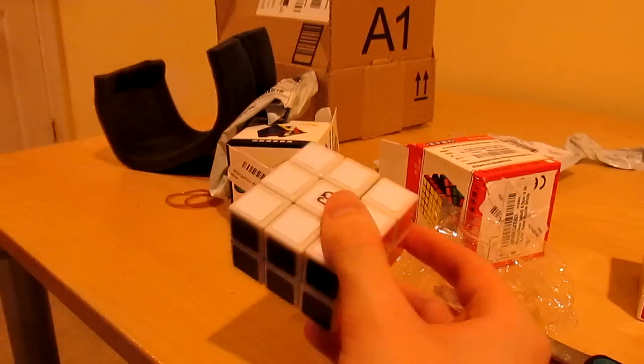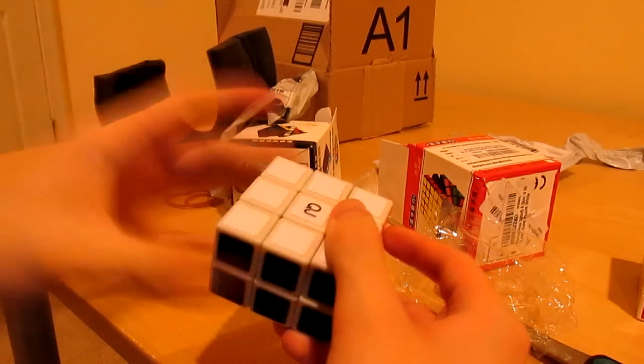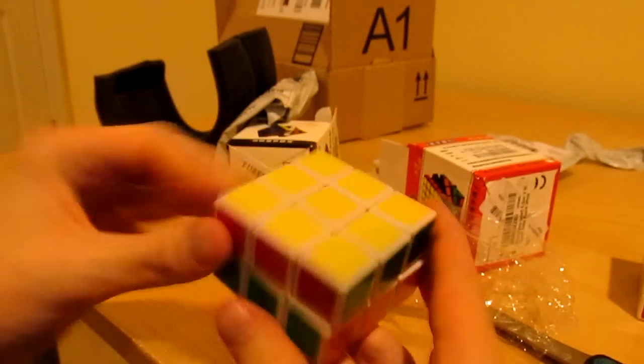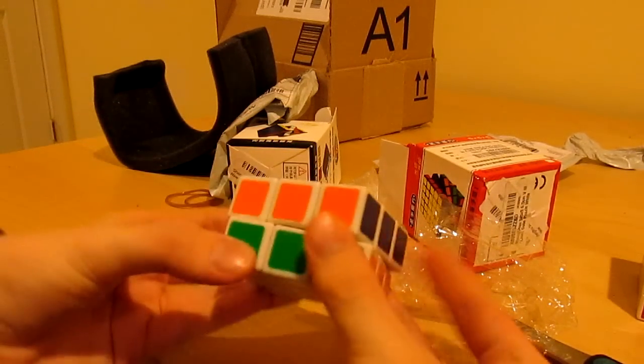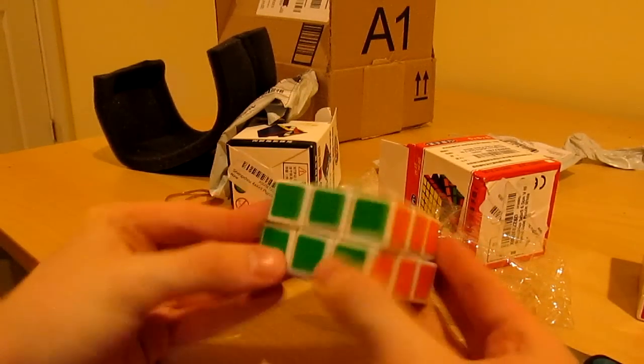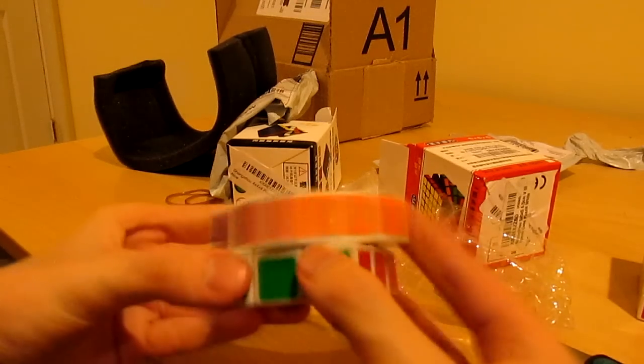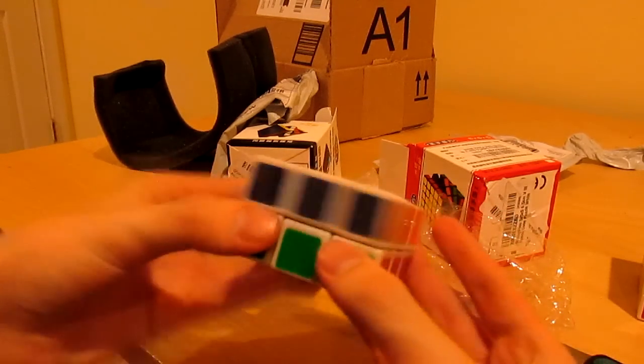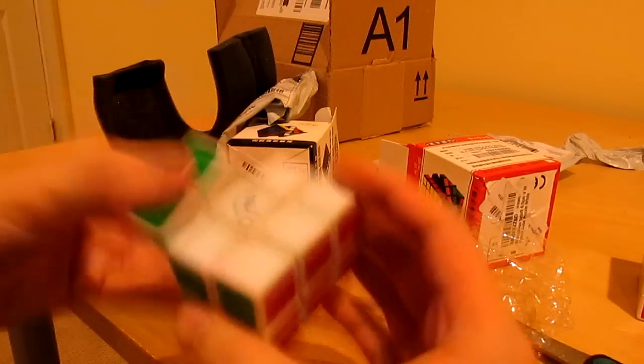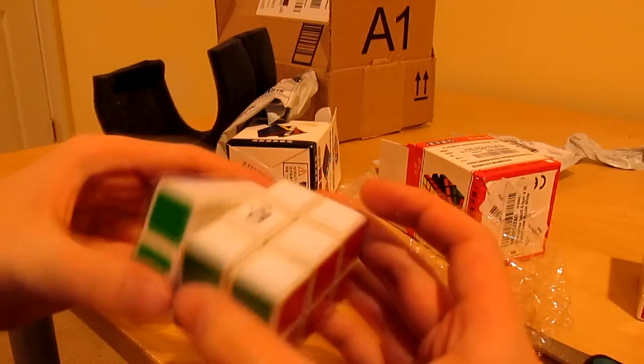So you got the QJ logo here, got the normal sticker layout. As you can see, a little disappointed by how it moved at first there. That was kind of weird how it locked up on me, but it moves fine now. The outer layers are a little clunky.